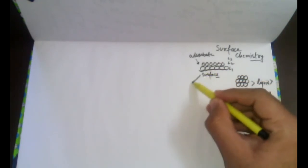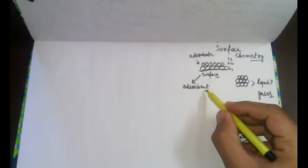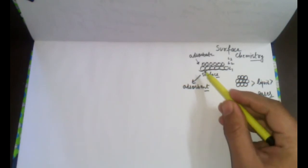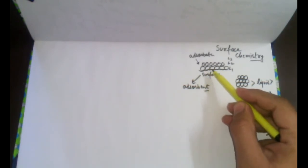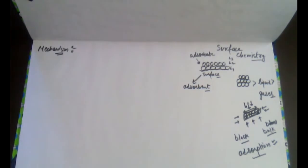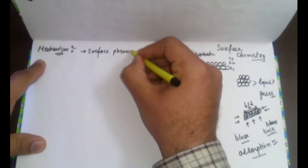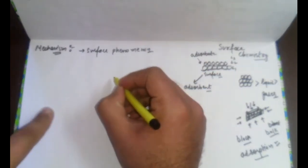The solid surface on which adsorption occurs we call the adsorbent. The name of the process is adsorption, the surface is the adsorbent, and the molecular species that get adsorbed on the surface due to intermolecular interaction are called the adsorbate. Now the mechanism for adsorption is clear: adsorption is a surface phenomenon.